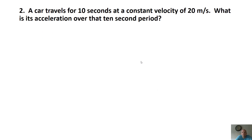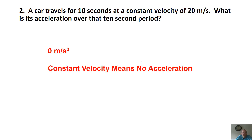Q2: A car travels for 10 seconds at a constant velocity of 20 m/s. What is its acceleration over that period? Watch out — this is a trick. Constant velocity means no acceleration, so the answer is zero m/s².